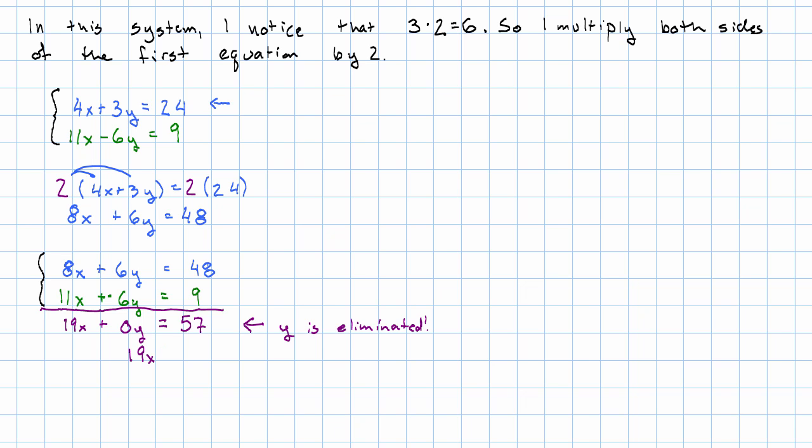So 19x is 57. Divide both sides by 19. We get x equals 3.